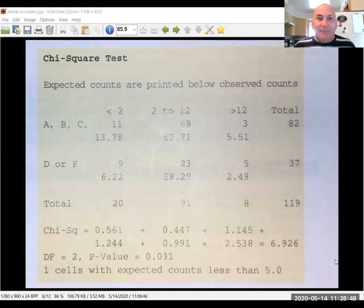This is what we had last time. Our column variable was how much time we spent on extracurricular activities a week: less than two hours, two to twelve hours, or more than twelve hours. Our row variables were good grades and bad grades. We wanted to know if there was a relationship between the amount of time spent on extracurriculars and grades. We had 82 students with good grades, 37 students with passing grades for a total of 119 students, broken up by hours spent on extracurricular activities.